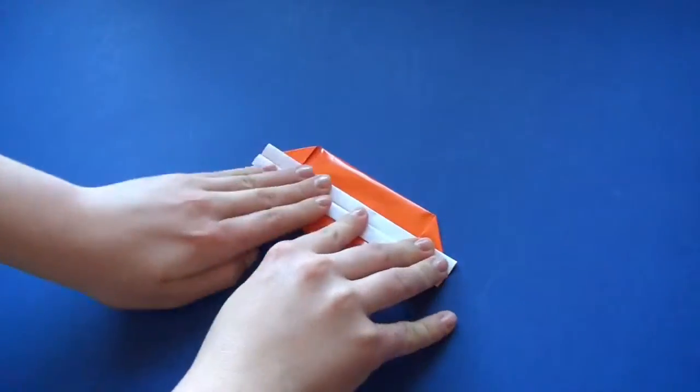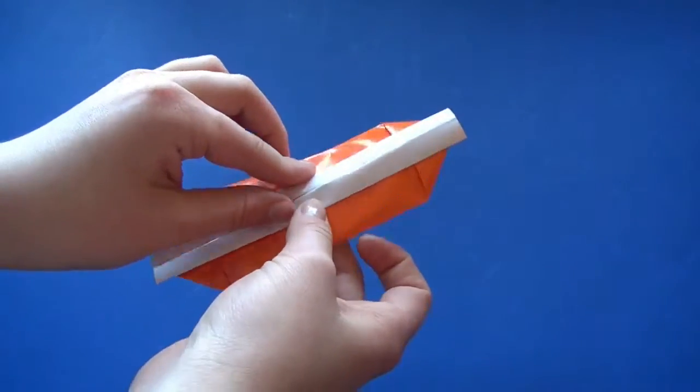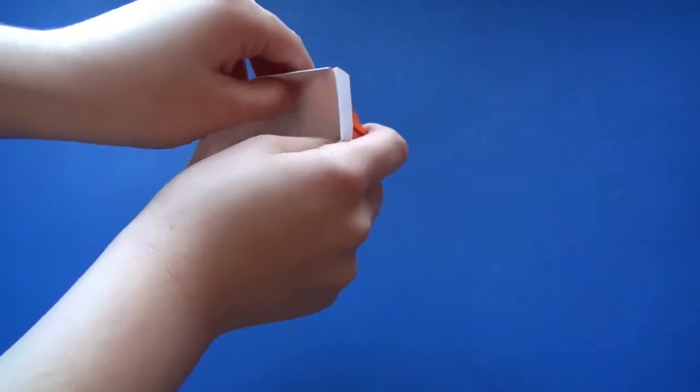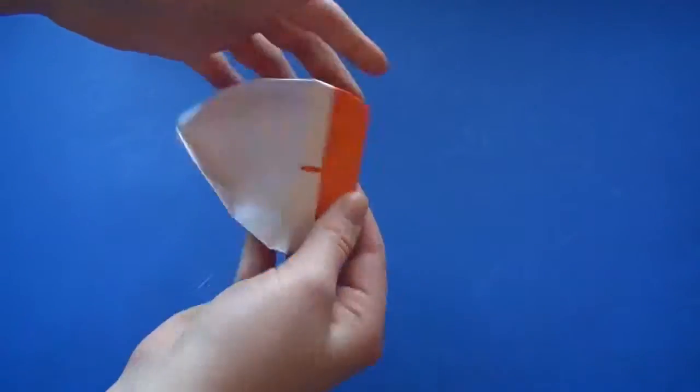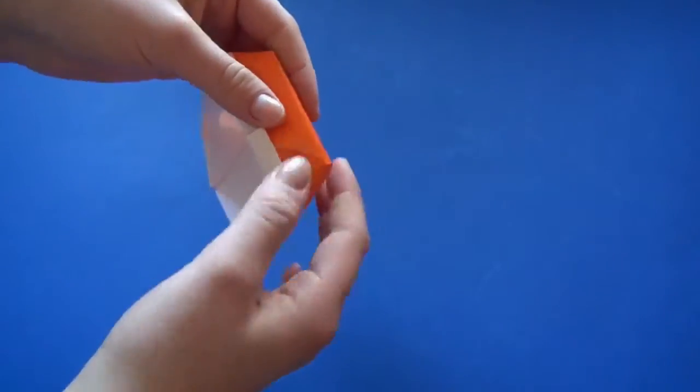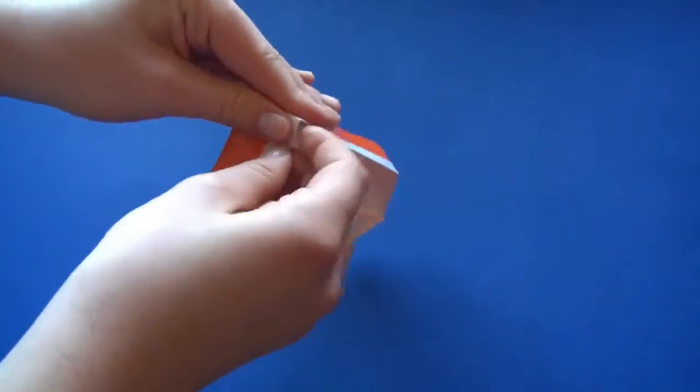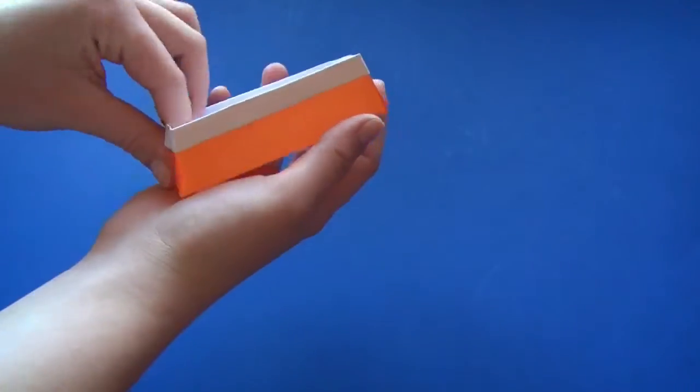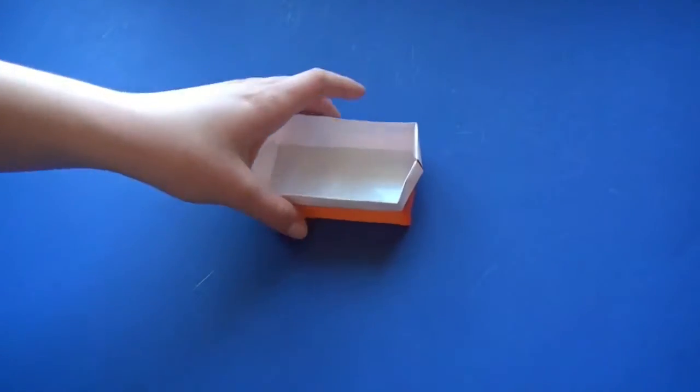Now it's time to open our box. Once you open it, make little creases right here like that and on this side. And there you have it - your origami box. It's really easy and simple.